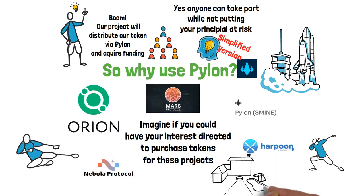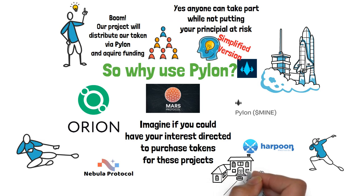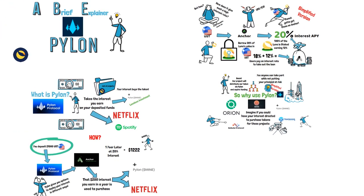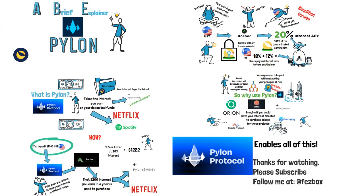Imagine having your interest earned being redirected to pay off your mortgage. Pylon can enable such things.